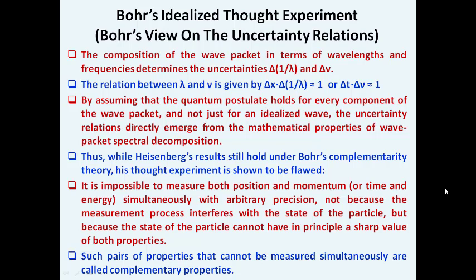The composition of wave packets in terms of wavelengths and frequencies determines the uncertainties: Δ(1/λ) = Δσ and Δν. The relation between these gives Δx·Δσ ≈ 1 and Δt·Δν ≈ 1. By assuming that the quantum relations hold for every component of the wave packet and not just for an idealized wave, the uncertainty relations directly emerge from the mathematical properties of the wave packet's spectral decomposition.